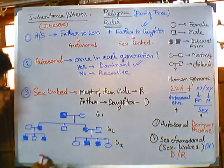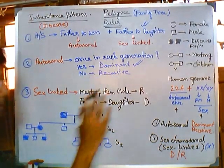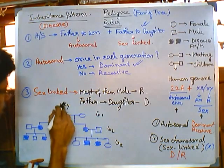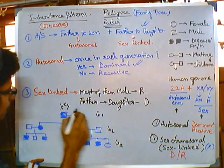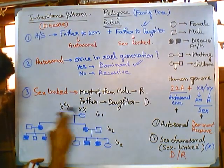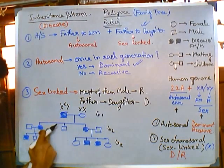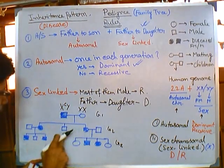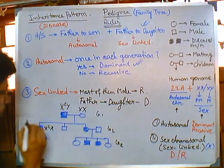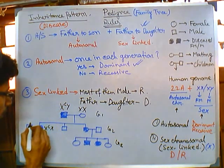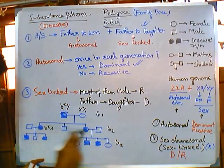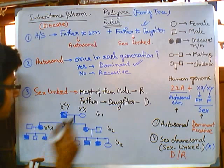Since it is X-linked dominant, let's verify. This diseased man crossed with this woman who is not diseased. In the next generation, there are two daughters and one son. Both daughters are getting this trait, and one son is not infected.